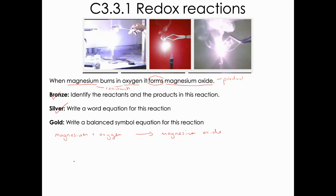Now write a balanced symbol equation for this reaction. We need to look in the periodic table. The chemical symbol for magnesium is Mg, remembering that the first letter is capital and the second is lowercase. Oxygen is a bit more difficult — the chemical symbol from the periodic table is O, but there are various diatomic elements, meaning they always come as twos.